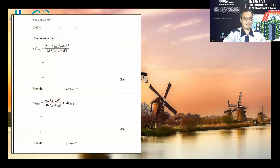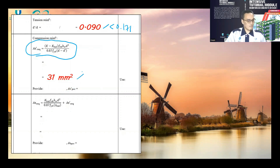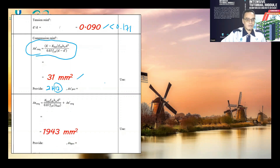The tension reinforcement ratio d'/d is equal to 0.090, which is lesser than 0.171, so we can use these equations to calculate the value of AS' required. The value of AS' required is equal to 31 millimeter square. We can provide 2H12, since the diameter of compression reinforcement is 12 mm, giving AS' provided of approximately 226 mm square.